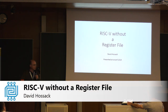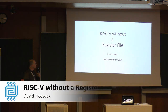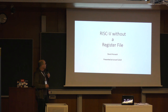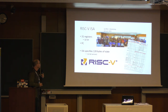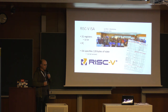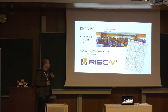Hello, I just want to introduce myself. I'm David Hossack and what I've been working on is a RISC-V without a register file. The RISC-V ISA, it's a few years old now, but has 31 registers each of 32 bits — that's the 32-bit version of the RISC-V plus the program counter. In total that's 128 bytes of state.